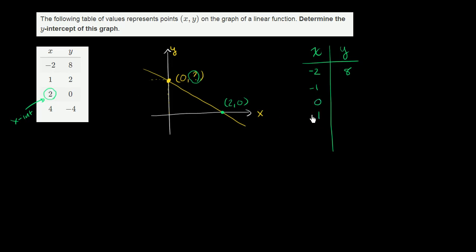Then they tell us when x is 1, y is 2. When x is 2, y is 0. This right over here is the x-intercept. When x is 4, y is negative 4. So they skipped 2 right over here. Y is negative 4.